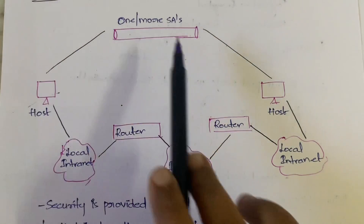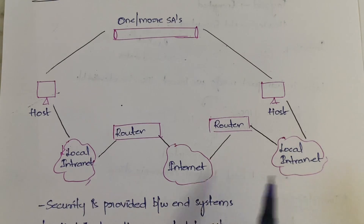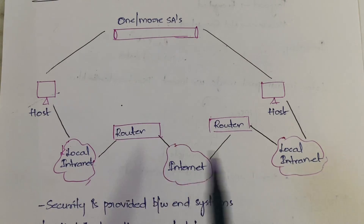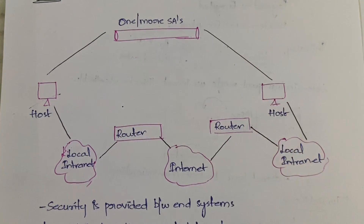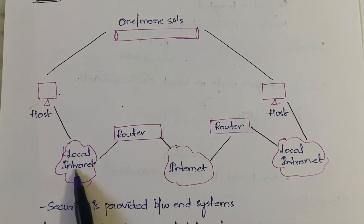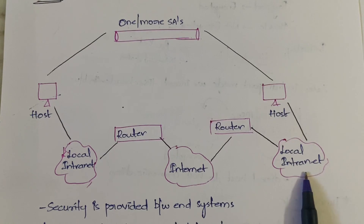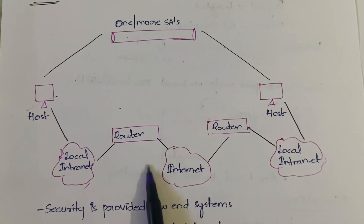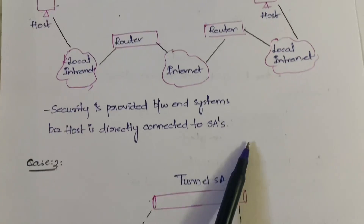So in case one, the security associations are directly connected to the hosts. The host is your computer and the other host is the receiver's computer. You are connected to your internet and the receiver is connected to their internet, both getting network from a common source — the internet.